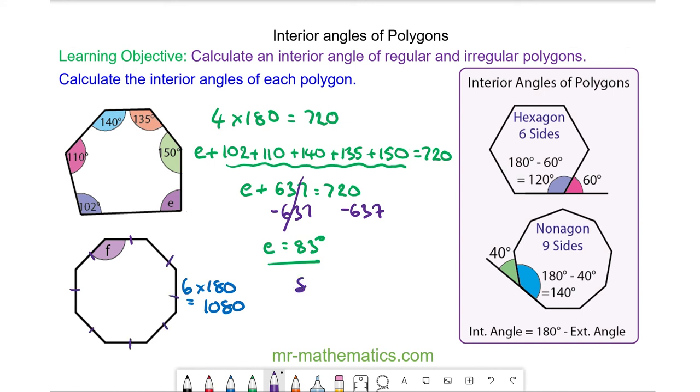So we have 8 lots of F is equal to 1080. Divide both sides by 8 and angle F is 135 degrees.